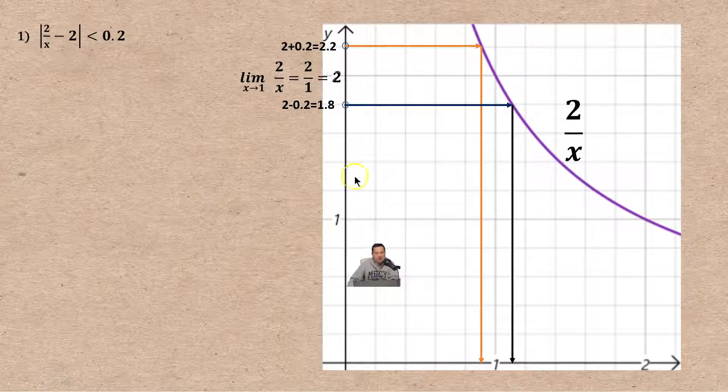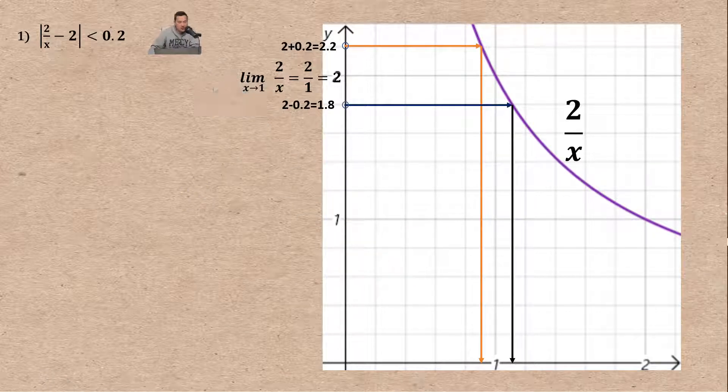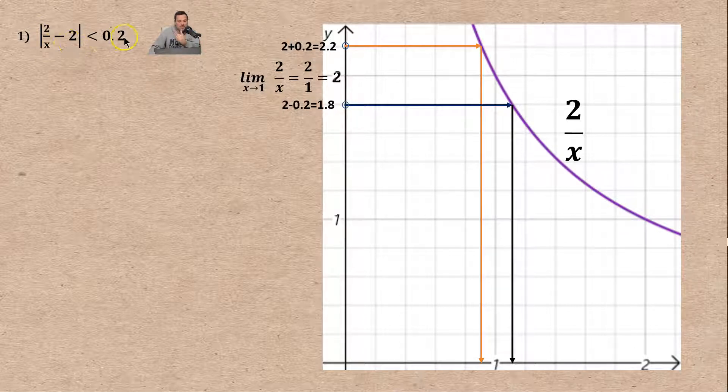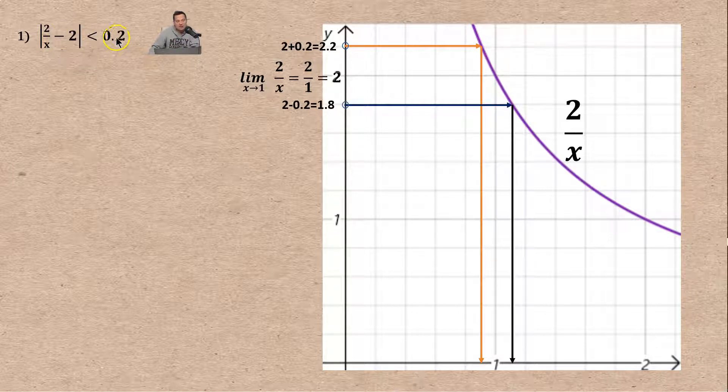We're going to apply the basic definitions. At step number one I have absolute value of 2 over x minus 2 less than 0.2. This says the function 2 over x minus the limit of the function 2, I want that spacing to be less than 0.2.